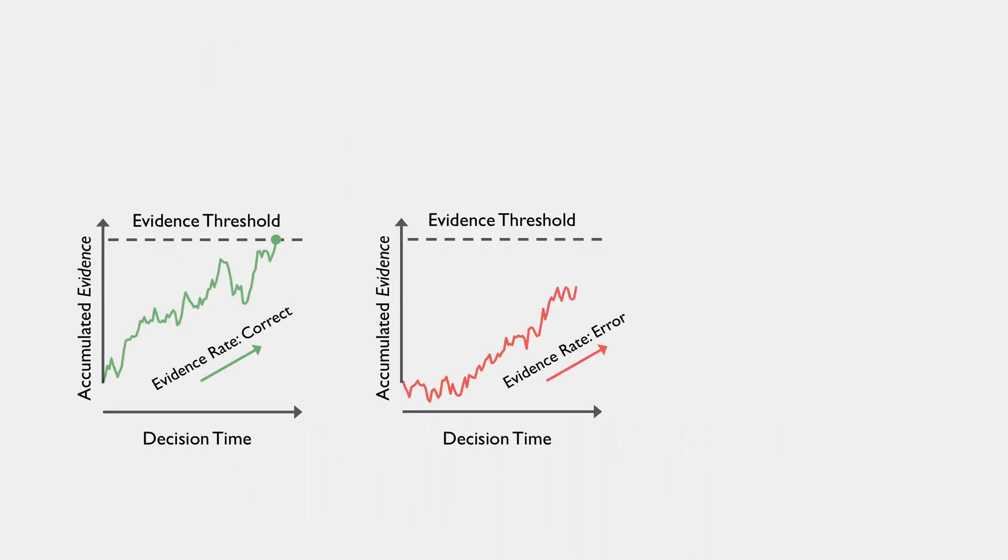Most models of decision-making assume some process of accumulating evidence. I'm showing this here in a race-based architecture where we have an accumulator that will sequentially sample information favoring the correct response and an accumulator that will sequentially sample information favoring an incorrect response.